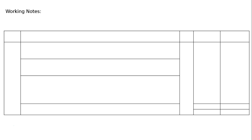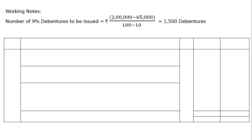First of all, we have to prepare working notes to find out the number of debentures to be issued. Number of 9% debentures to be issued equals Rs. 2 lakhs minus Rs. 65,000, whole divided by 100 minus 10. Here 100 is the face value of the debenture and 10 is the percentage of discount, so 100 minus Rs. 10 equals Rs. 90. That equals 1,500 debentures.